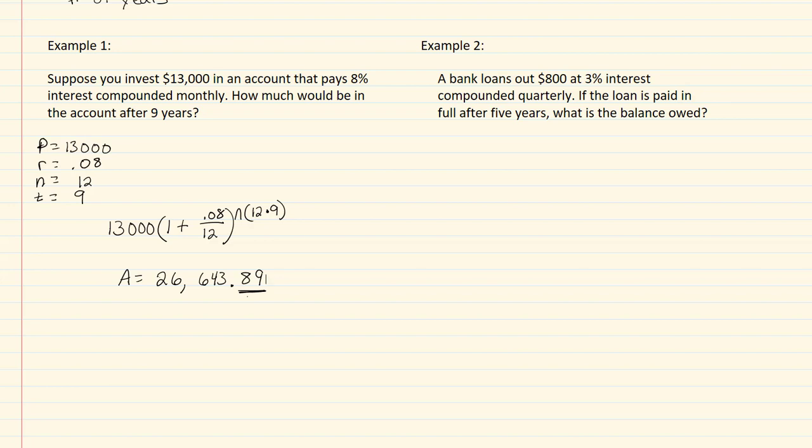So let's look at example two. A bank loans out eight hundred dollars at three percent interest compounded quarterly. If the loan is paid in full after five years, what is the balance owed? So P is going to be eight hundred, our r is three percent, which would be point zero three.